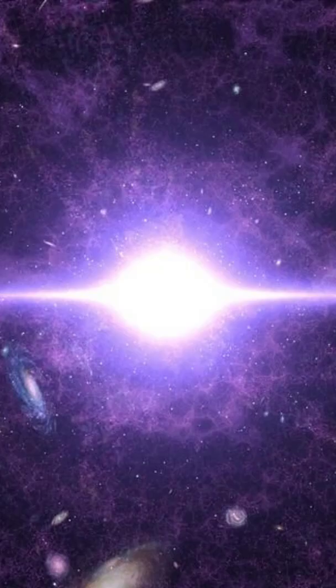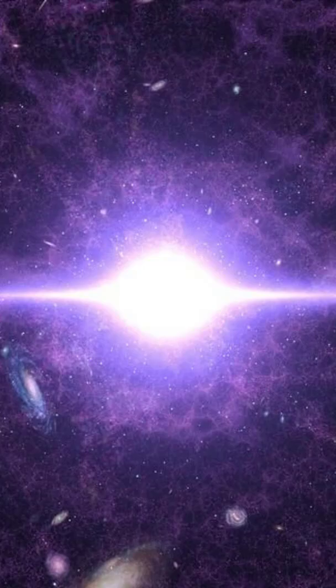Neutron stars are incredibly dense, with a mass greater than that of our sun packed into a sphere only about 12 miles in diameter. This makes them one of the most extreme objects in the universe.